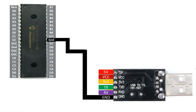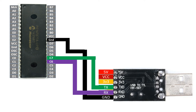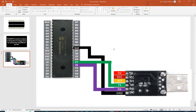For the TX pin, this will go to the RX pin of your PIC, that is pin number C7. And the RX pin of the CH340 will go to the TX pin of the PIC, that is pin number C6 or pin number 25. TX to RX and RX to TX — that's how the UART protocol works.